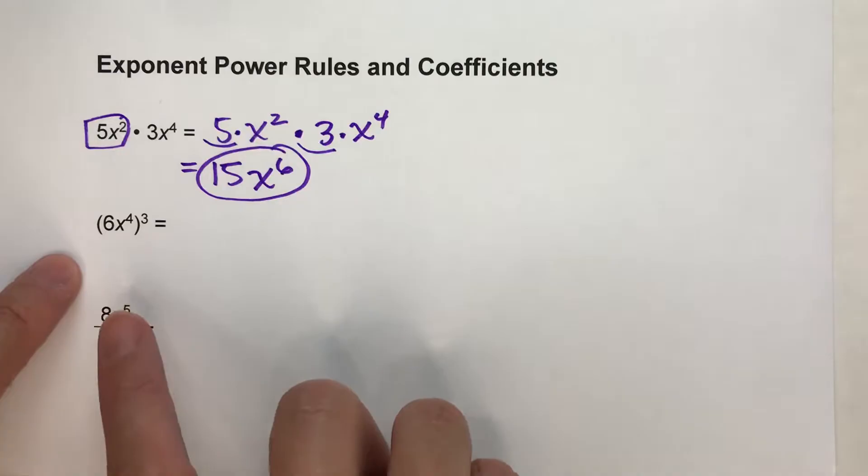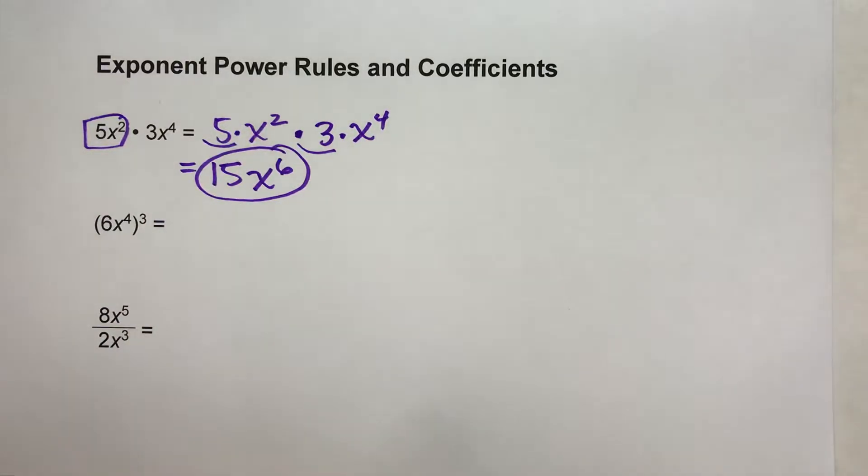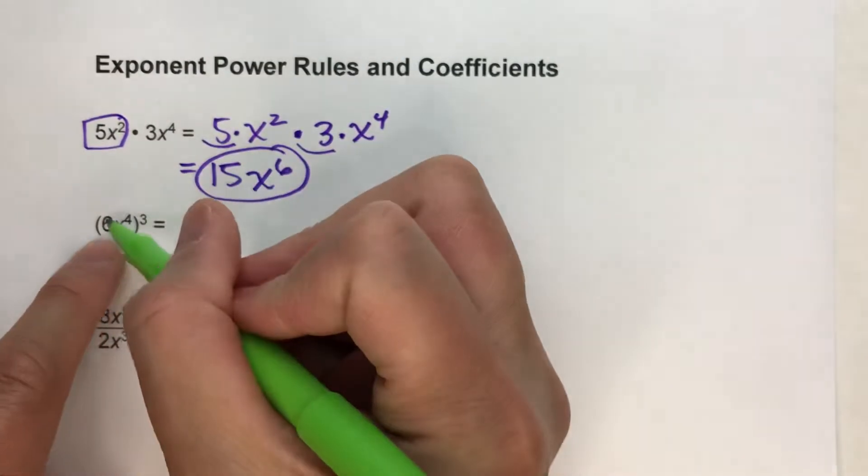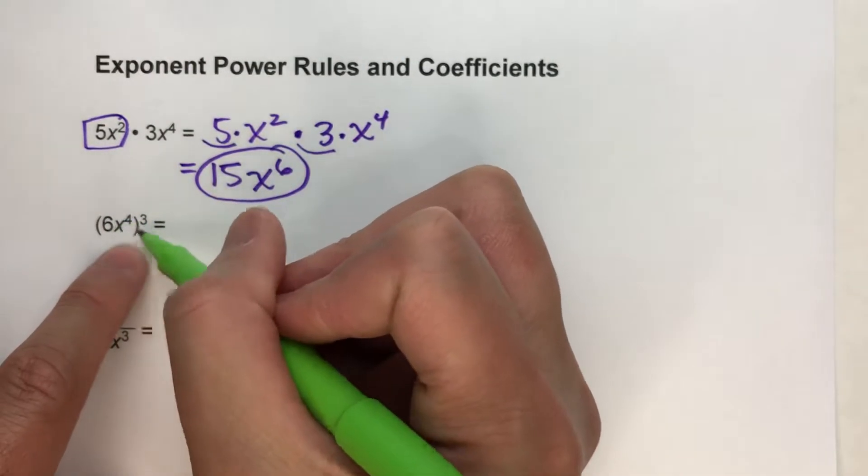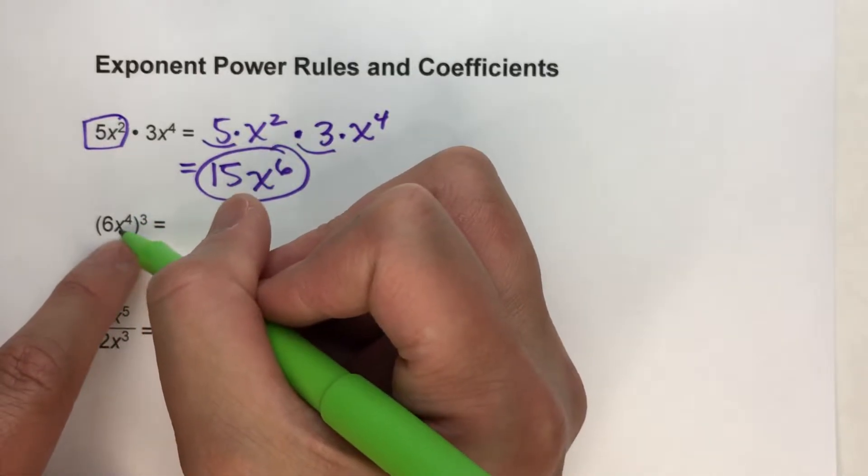I'll give you another example. 6x to the fourth, all raised to the third power. So again, in this case, 6 is my coefficient. So I'm taking 6 and multiplying it by x to the fourth. So 6 is not being raised to the fourth power, just the x is.